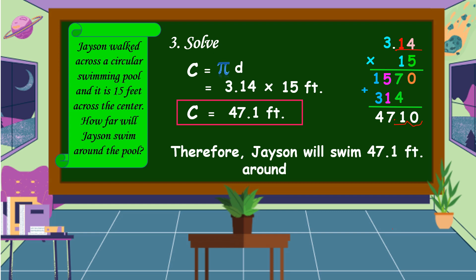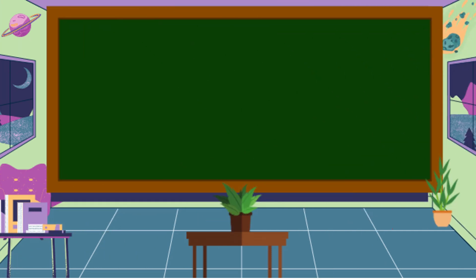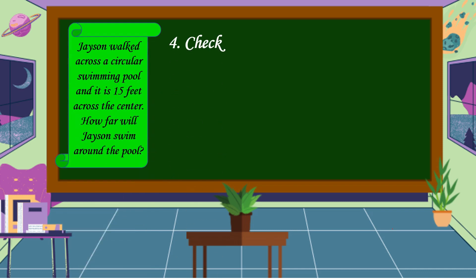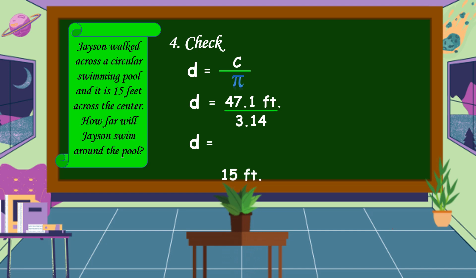Therefore, Jason will swim 47.1 feet around the pool. We have already an answer to our problem. The last step is we're going to check. In checking, we're going to find the diameter using the formula: circumference divided by pi. The circumference is equal to 47.1 feet and pi is equal to 3.14. By using a calculator, if we divide 47.1 by 3.14, the diameter is equal to 15 feet. As we know, the swimming pool is 15 feet across the center, or it has a diameter of 15 feet. Therefore, our answer is correct.